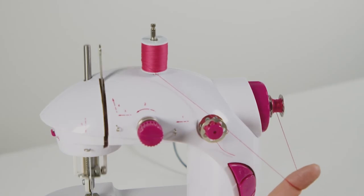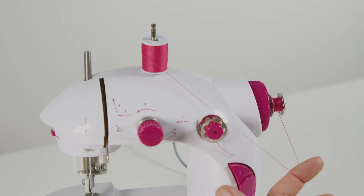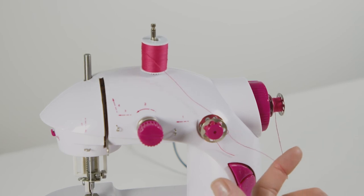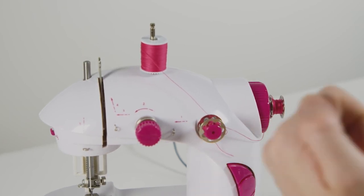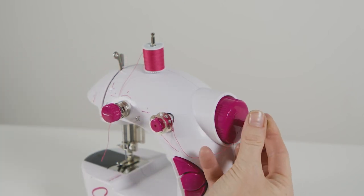Whilst the bobbin is winding, hold on lightly to the thread between your index finger and thumb to carefully guide the thread evenly onto the bobbin. Once your bobbin is full, cut any excess top thread with scissors and remove the bobbin from the hand wheel spindle.